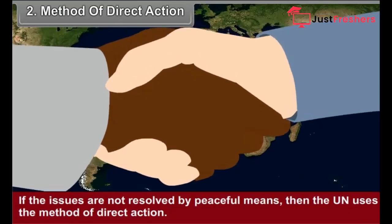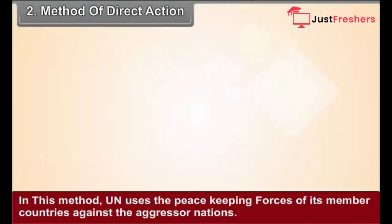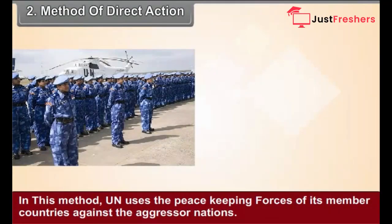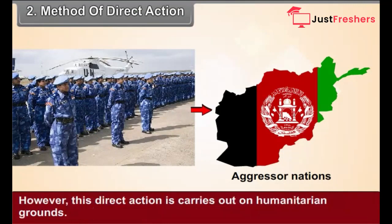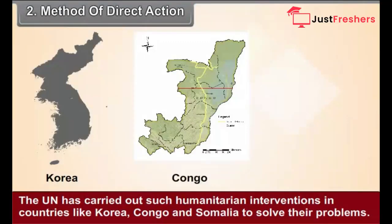2. Method of Direct Action: If the issues are not resolved by peaceful means, then the UN uses the method of direct action. In this method, the UN uses the peacekeeping forces of its member countries against the aggressor nations. However, this direct action is carried out on humanitarian grounds. The UN has carried out such humanitarian interventions in countries like Korea, Congo and Somalia to solve their problems.